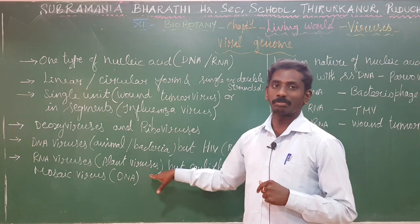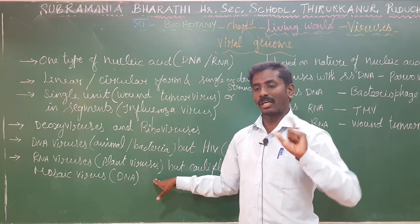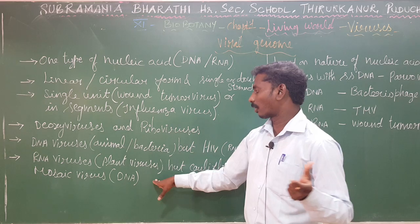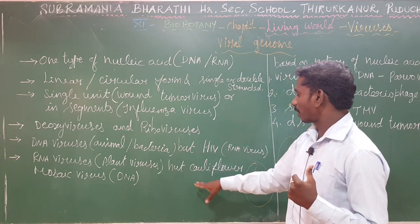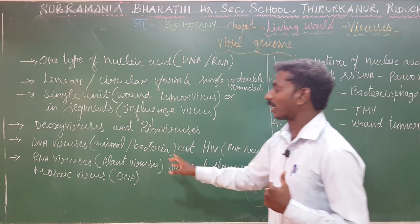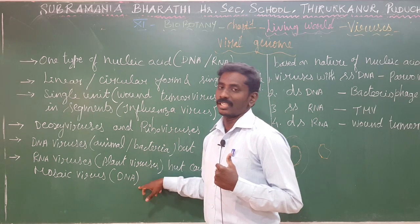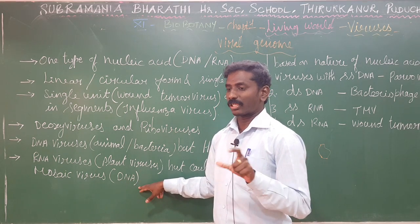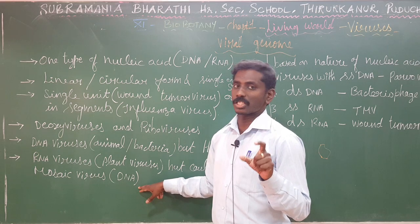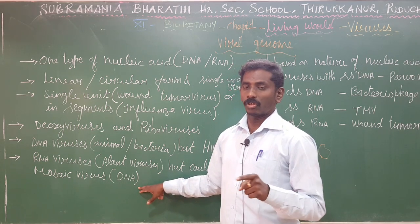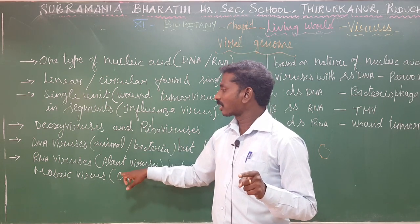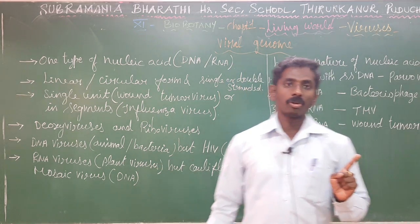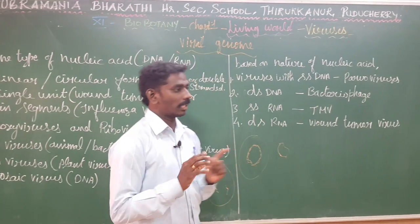RNA viruses are generally called plant viruses, as they cause plant diseases. However, the exception is the cauliflower mosaic virus, which contains DNA instead of RNA. So majorly, animal disease-causing viruses have DNA nucleic acid, while plant disease-causing viruses are RNA-dominated.